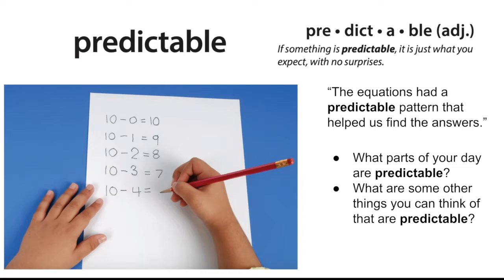Another important word in this story is predictable. This is definitely one that you've probably heard — related words like predictions and stuff like that. Predictable is an adjective, or a describing word. If something is predictable, it's just what you'd expect — no surprises. For example, in the picture, the equations are in a predictable pattern that helps us find the answers. You can check out the number pattern in those equations to see how it's predictable. Here are some thinking questions: What parts of your day are predictable? What parts go exactly as you'd expect with no surprises? And what are some other things you can think of that are predictable?